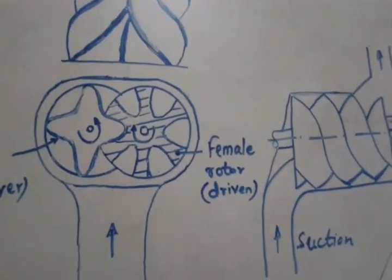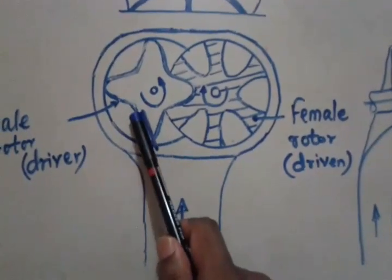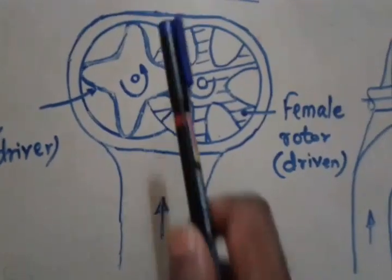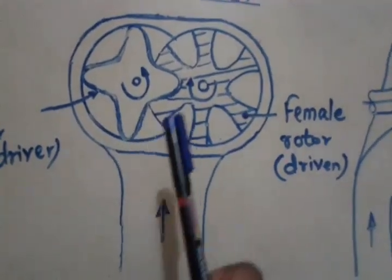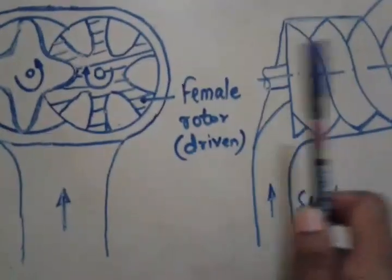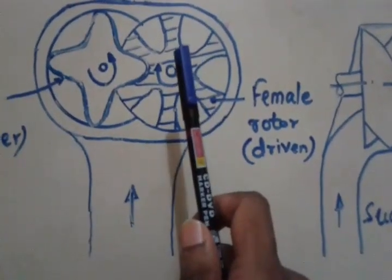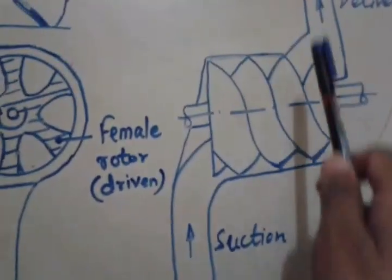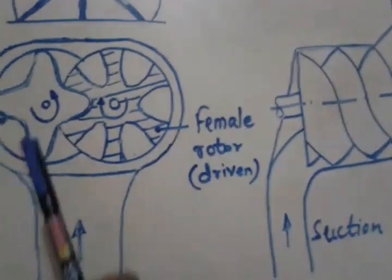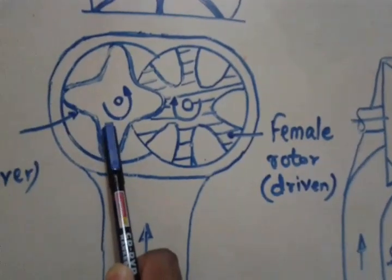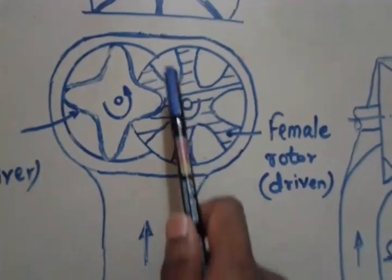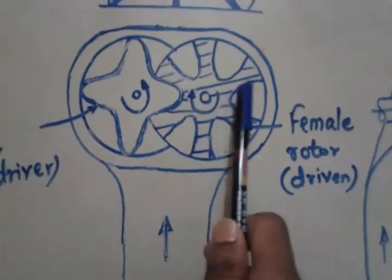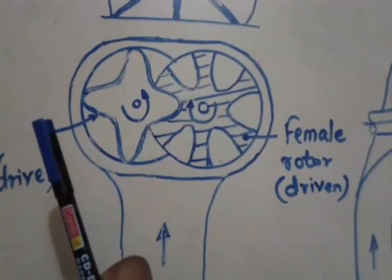Let us discuss the working. When the driving rotor rotates, the housing nearest to the suction end gets opened and the air is filled. The air which is so trapped is moved axially as well as radially with the rotation of the rotors and gets compressed. Air gets compressed until it reaches the delivery end. As the number of lobes of the male rotor and the number of gullies of the female rotor are different, the male rotor and the female rotor have different speeds.